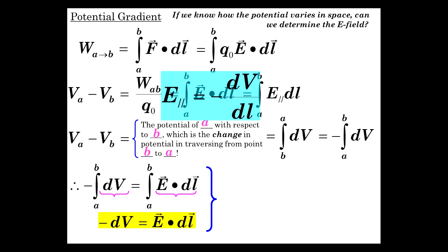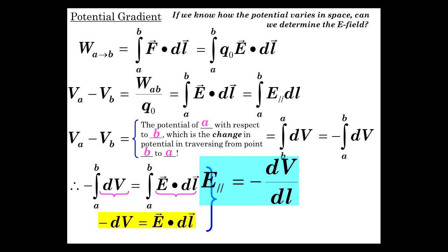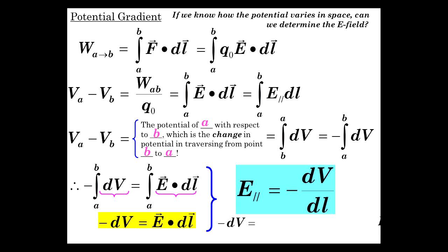E parallel then is equal to minus dV over dL, just by dividing both sides by dL. So we're informed about the electric field by the rate at which the potential changes in space, and it's equal to that negative change.